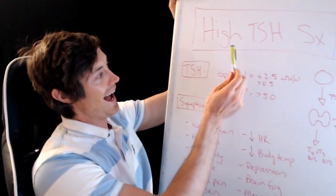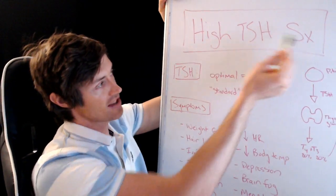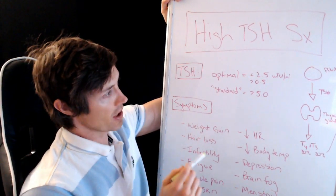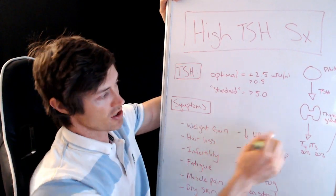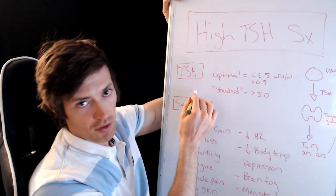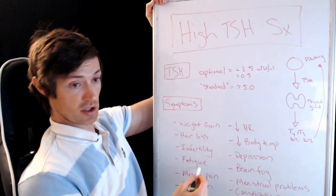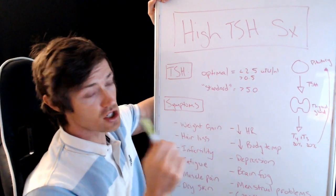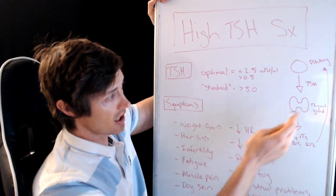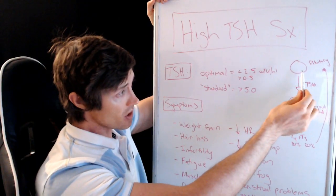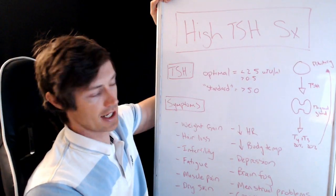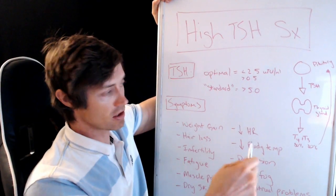Let's jump into our topic, which is high TSH symptoms. The SX here is an abbreviation for symptoms — don't let that confuse you. To jump into this topic, we really need to define a little bit about the physiology of the thyroid. Your thyroid function starts in the brain, goes to the thyroid gland, then goes to the rest of the body, and there's something we call a feedback loop involved here.